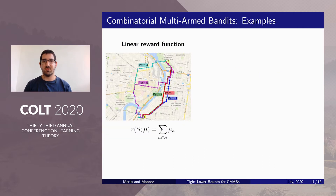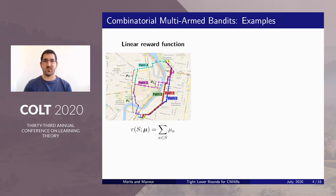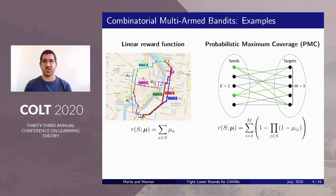Let's look at some concrete examples. Probably the most prevalent example is the linear reward function, related to problems such as routing. In this specific example, the arms are the road parts, and the actions are a complete path from the source to the target. Another very common example is the probabilistically maximum coverage problem, or the PMC problem. In this case, we have a bipartite graph, and the agent selects a set of nodes at one side of the graph, with the goal to reach as many nodes on the other side through probabilistically triggered edges. The arms in this case are actually the edges of the graph.